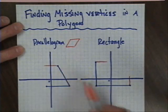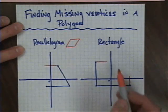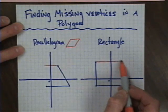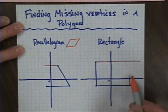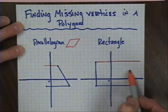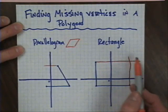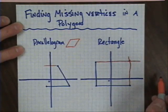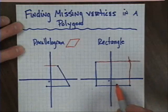A rectangle is significantly easier than a parallelogram. I'm simply going to extend these lines over, then extend this line up, and where they cross right here is going to be my new point.